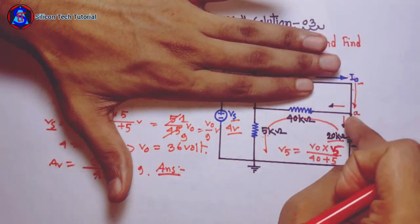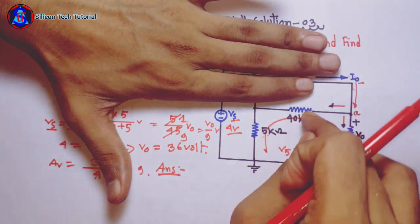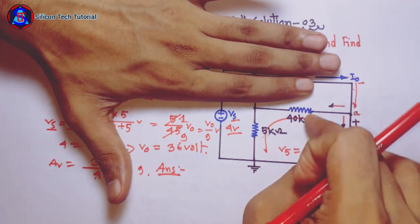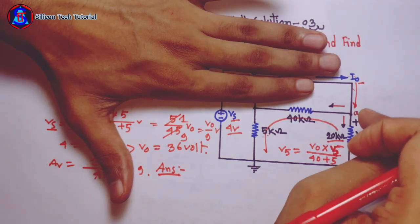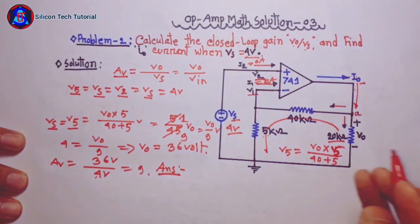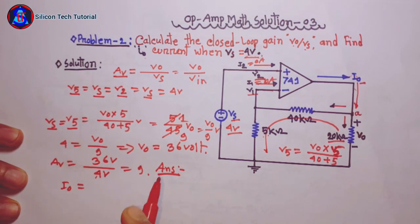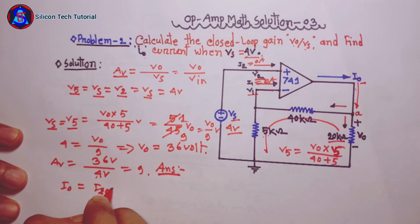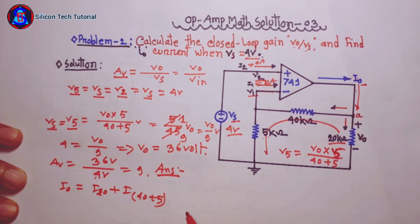The current is 20, and 20 plus 5 is 45. So the output current involves i20 plus i40 plus 5.